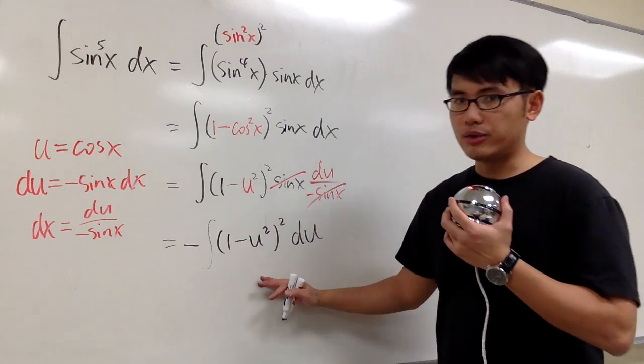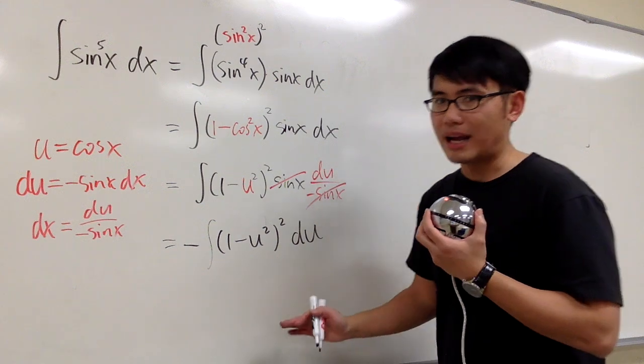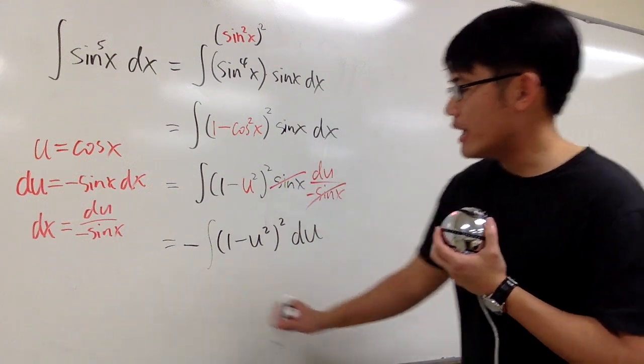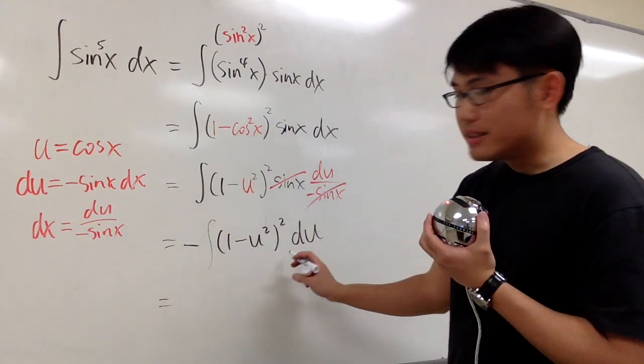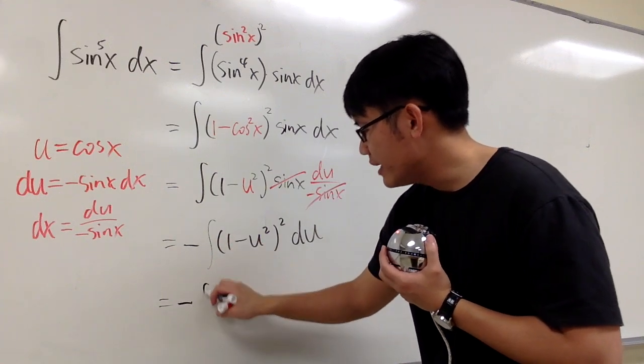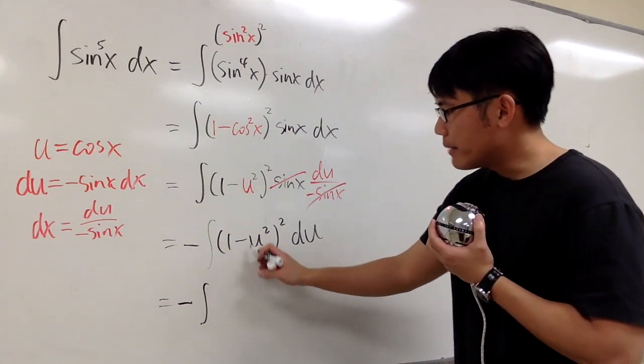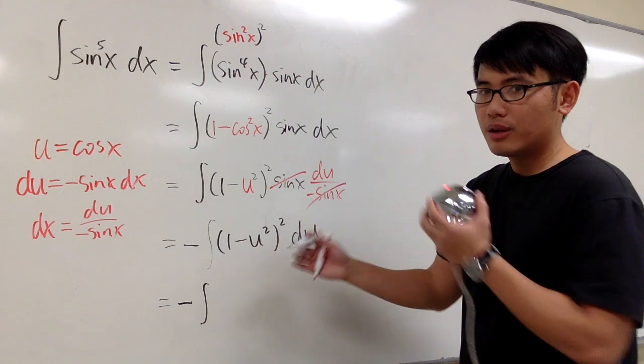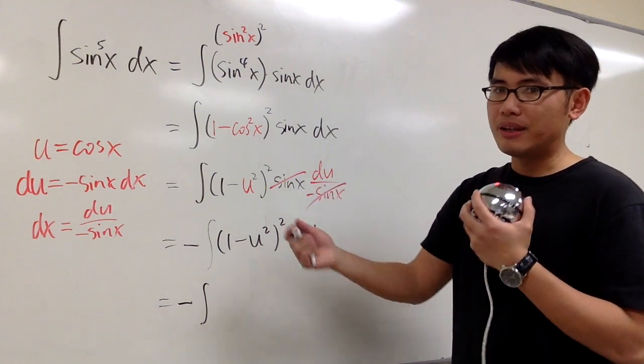And this is just a polynomial situation. We can do the power rule backwards for this. But then we have to make sure we expand this out first. So we still have the negative on the outside, and we have the integral. And then we do 1 minus u squared raised to the second power. If you want to write it down twice, expand it, that's okay.